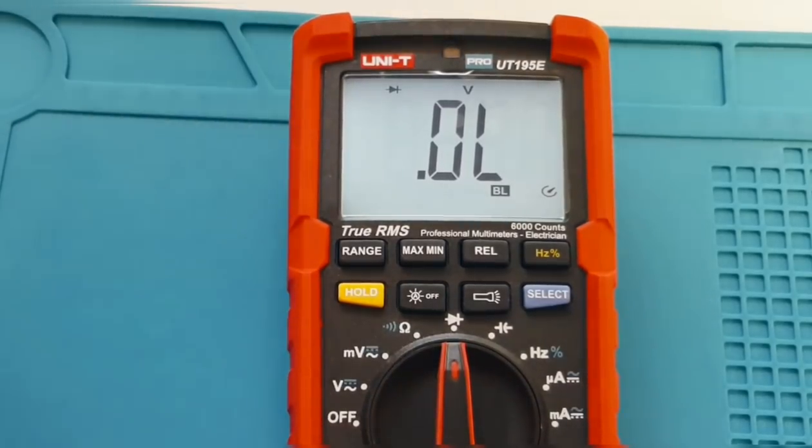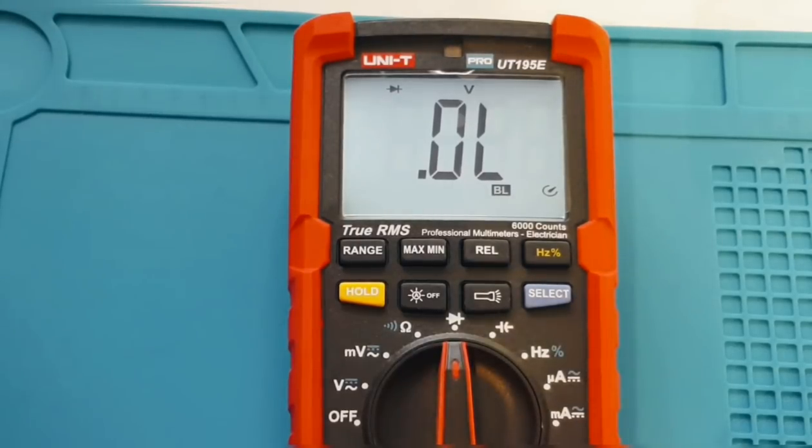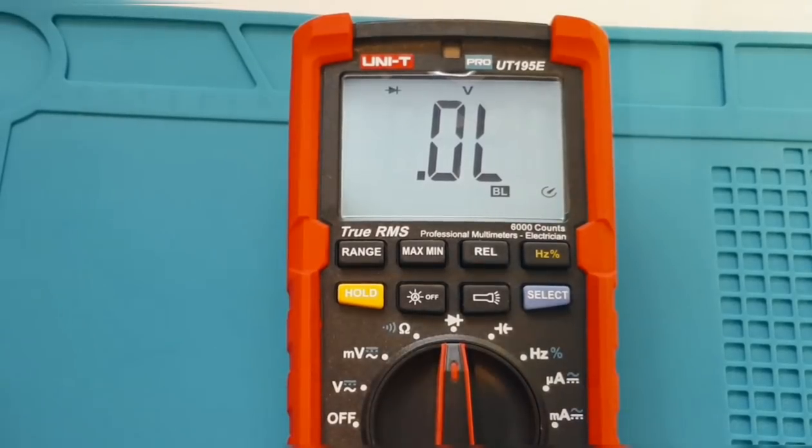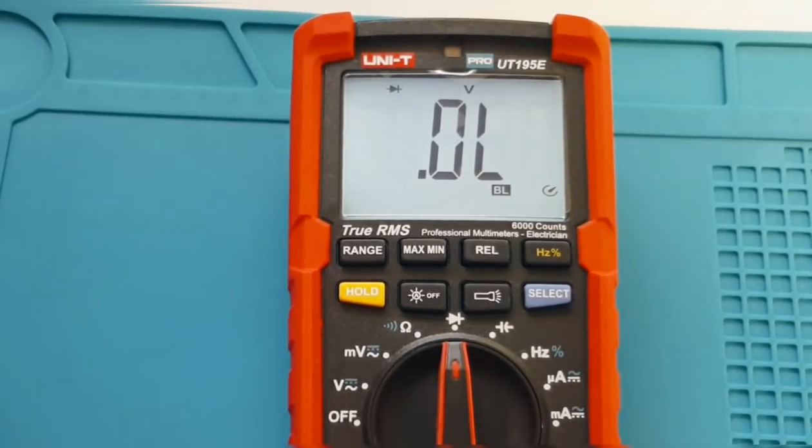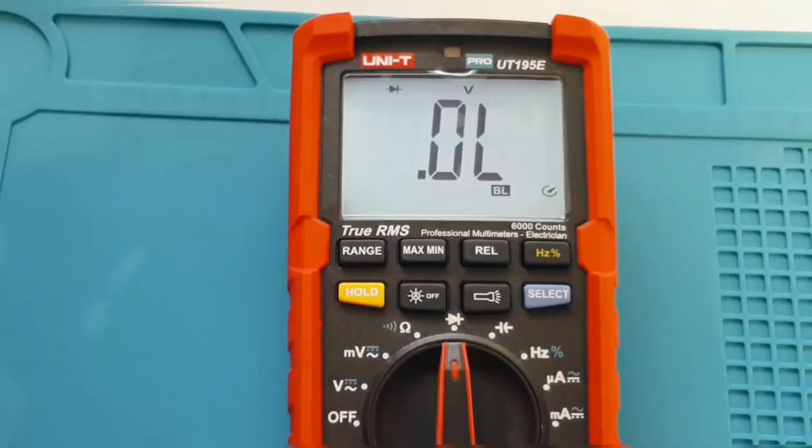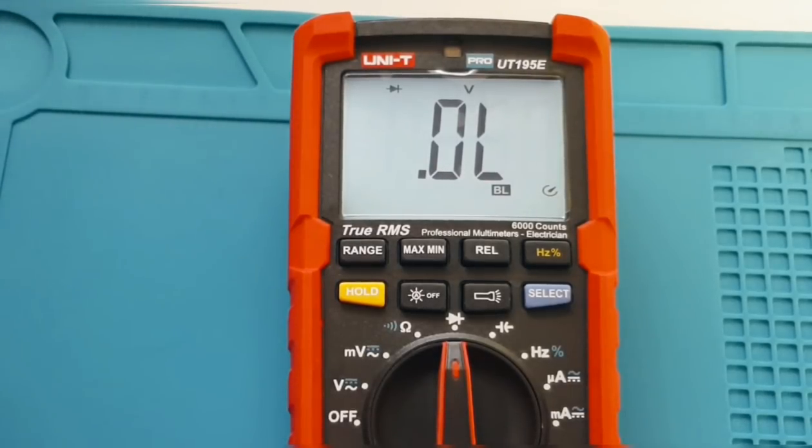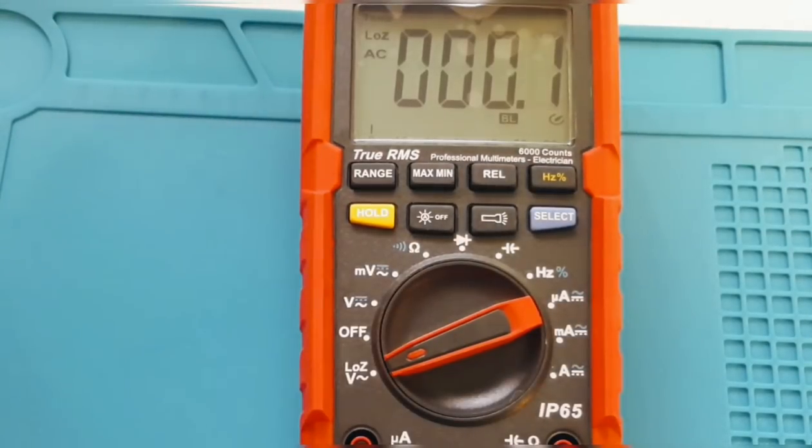Now, if we look at the display itself. It's a large LCD single display. Actually, sorry. This is not a dual-mode display. That is the UT-195DS. This is the single display. In terms of refresh rate, this unit is three times per second, as well as the 195M. The upgraded 195DS has a five times per second refresh rate. They're all true RMS. True root mean square.